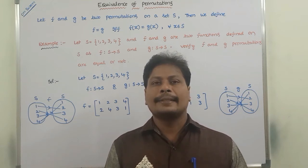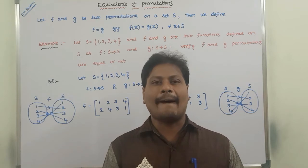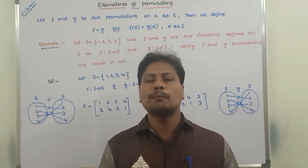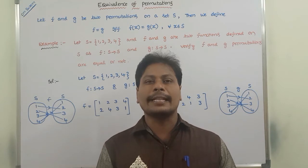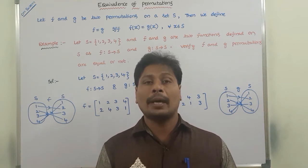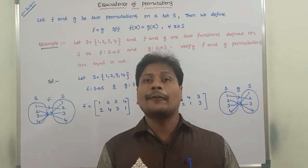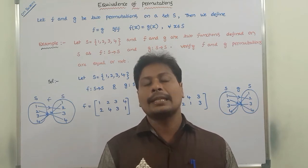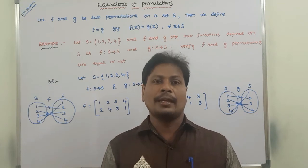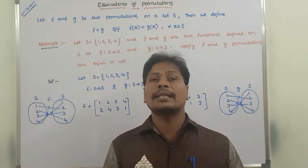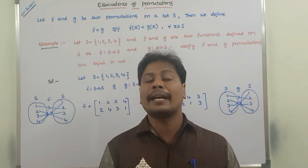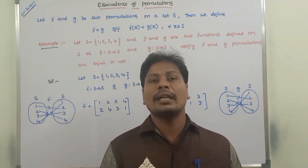Hi friends, today I am giving a lecture on equivalence of two permutations, or equality of two permutations, in group theory of discrete mathematics. In the previous video, we have already discussed what a permutation group is and examples of permutations on a given set. Please refer to those videos on my YouTube channel. In this video, we will discuss when two permutations are equal on a given finite set, illustrated with one example problem.